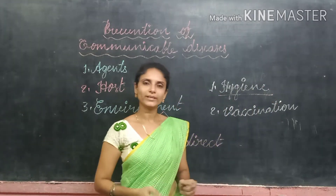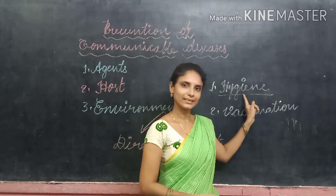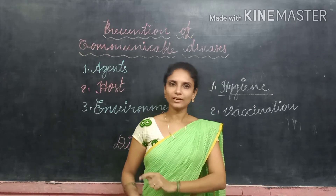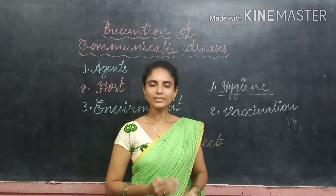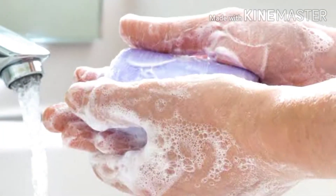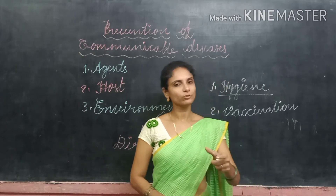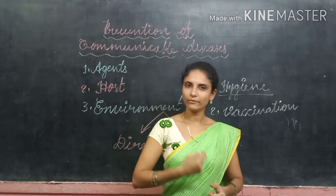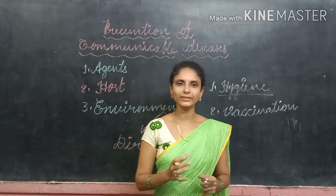What is hygiene? Keeping our body and our surroundings clean is called hygiene. It includes personal hygiene as well as surroundings hygiene. In personal hygiene, we must wash our hands before and after eating with soap to prevent the spread of diseases. If you do not wash your hands, you may get many diseases, because germs can enter your body when you hold objects or shake hands with others.